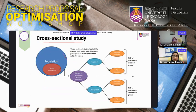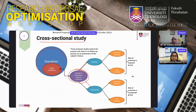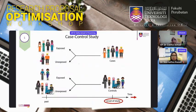For a cross-sectional study, we start with the target population, then take a sample. Within the sample, we divide into exposed and unexposed groups and look at outcomes. We measure the risk of outcome in the exposed group and risk of outcome in the unexposed group. This simultaneous measurement of exposure and outcome is the hallmark of a cross-sectional study.